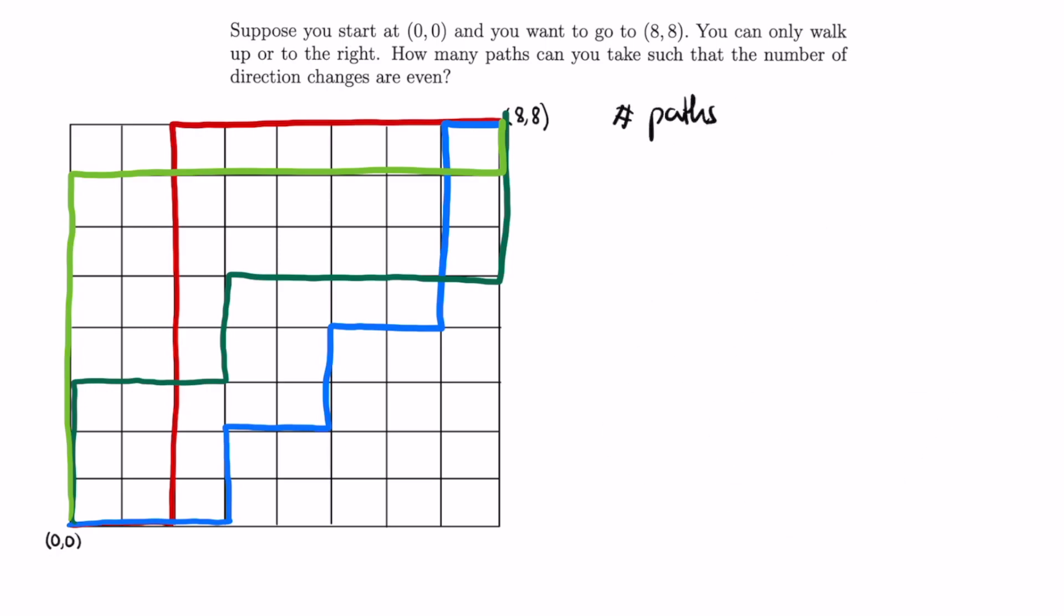Alright, so we want to find the number of paths that start with R and end with R. If the first step we take is R, then we're at the point (1,0), and since the last step is R, the point before that last step is (7,8). Therefore, we just want to find the number of paths from (1,0) to (7,8).